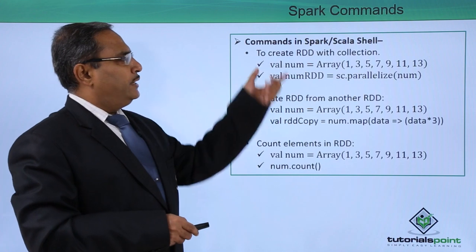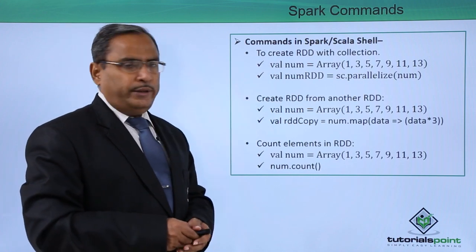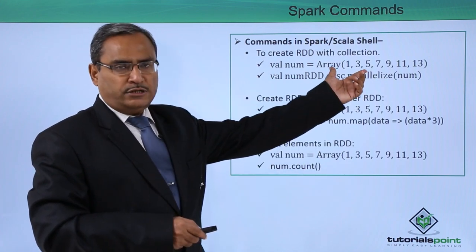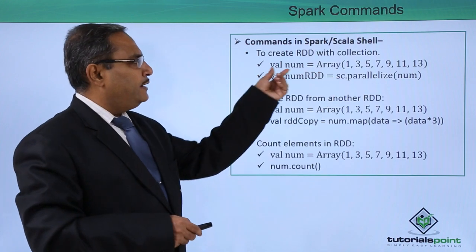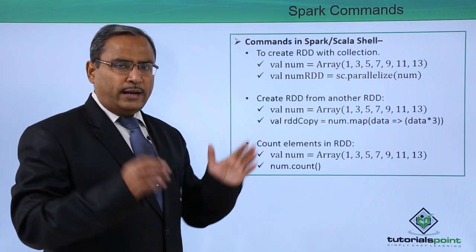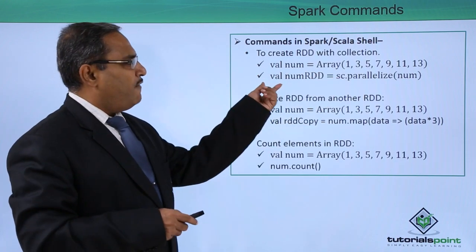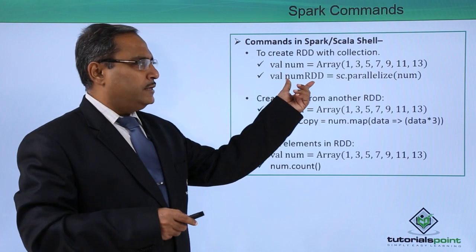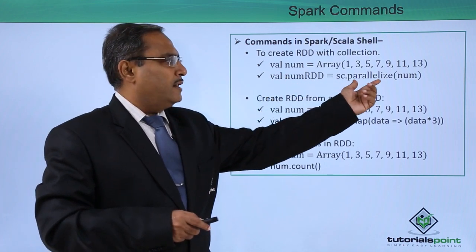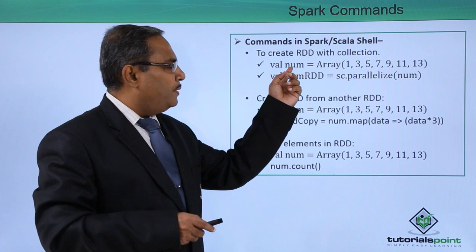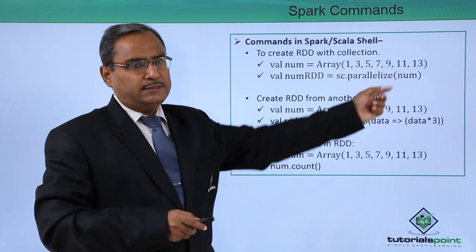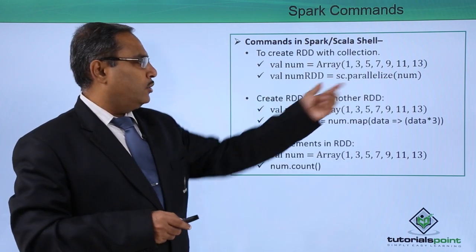To create an RDD with a collection, we first define a collection of integers: val num = Array(...). Then val numRDD = sc.parallelize(num). The num array is passed as the input argument to the parallelize method.